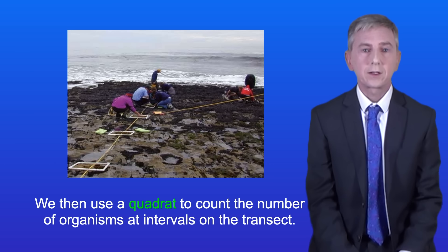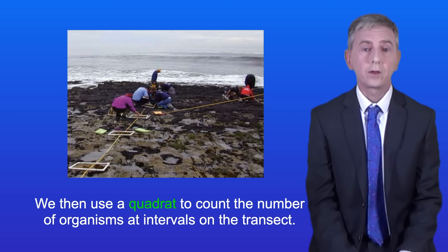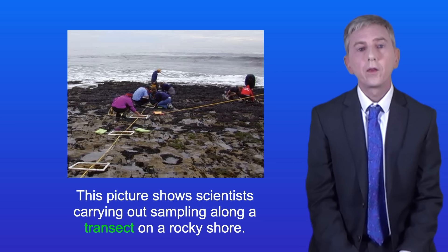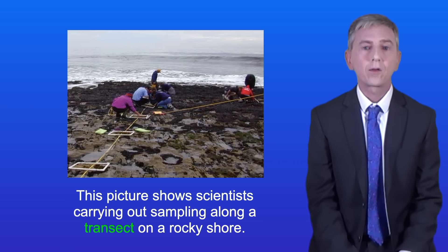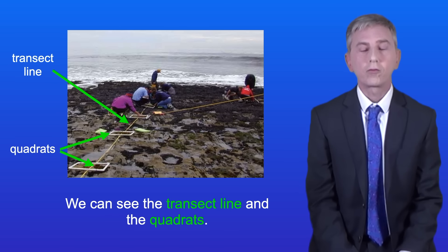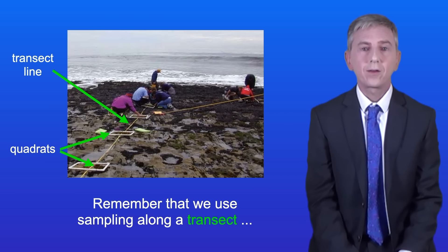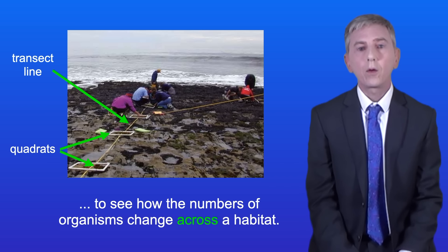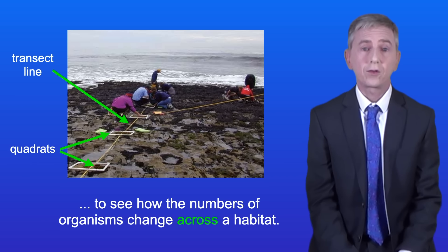We then use a quadrat to count the number of organisms at intervals on the transect. This picture shows scientists carrying out sampling along a transect on a rocky shore — we can see the transect line and the quadrats. Remember that we use sampling along a transect to see how the numbers of organisms change across a habitat.